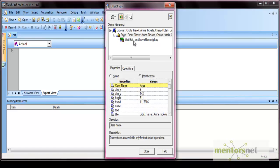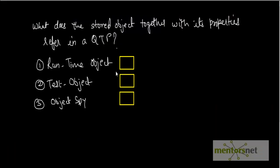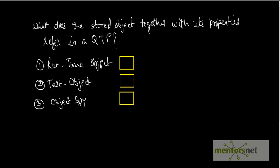This is all about the object spy in QTP. Finally, a question for you: what does the stored object together with its properties refer to in QTP? Runtime object, test object, or object spy? Check against the correct answer. Thank you.